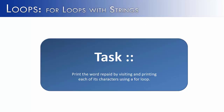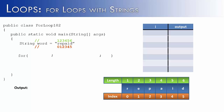In this video, the goal is to give tasks to perform with for loops on strings. The first task is to print the word 'repaid' by visiting and printing each of its characters using a for loop. The word 'repaid' has its length shown in green and its index in orange in a table. A t-chart will track what i is going to be, along with the output at each iteration of the loop.